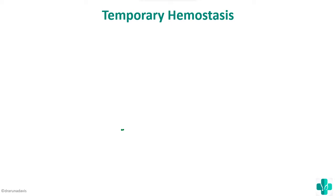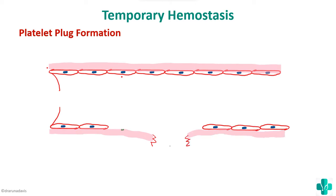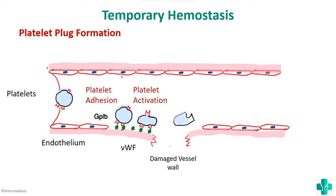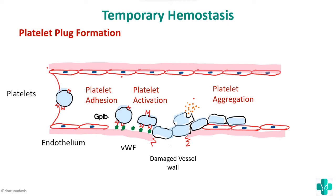For temporary hemostasis: whenever there is a cut in the vascular wall, there will be vasoconstriction followed by platelet plug formation, which temporarily stops the bleeding. When there is a vascular injury, the subendothelial collagen is exposed, causing von Willebrand factor to bind. Platelets bind to the von Willebrand factor via the GP1B receptor, become activated, release their granules, and aggregate — thus forming a platelet plug.